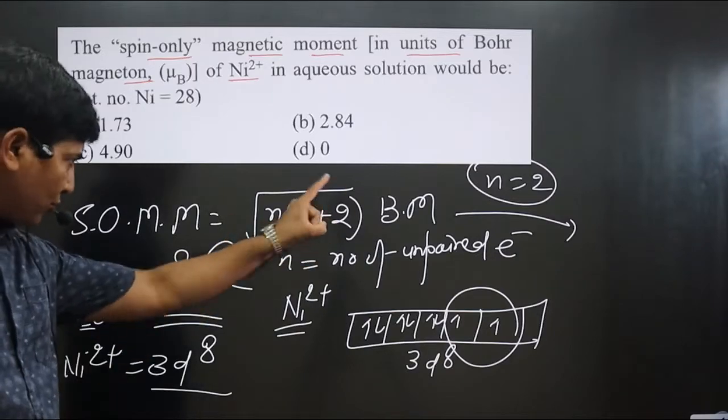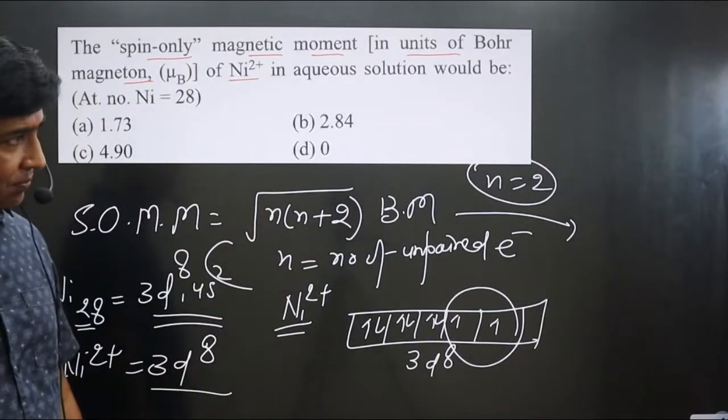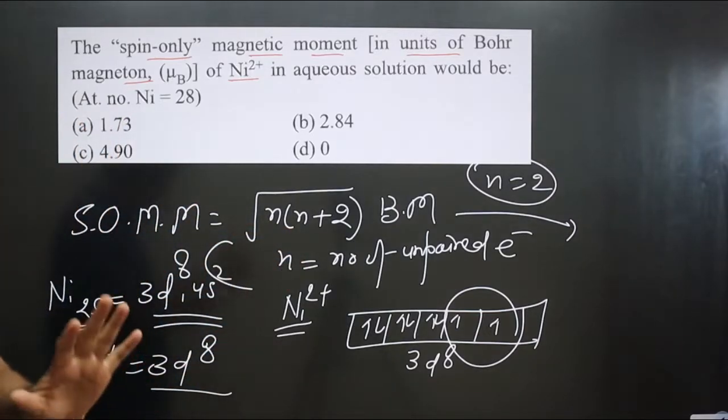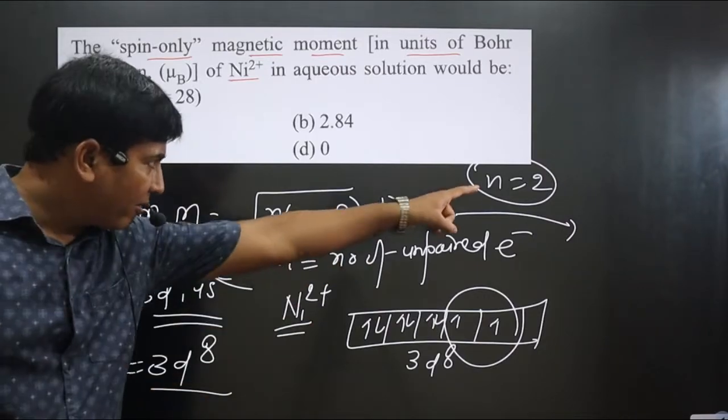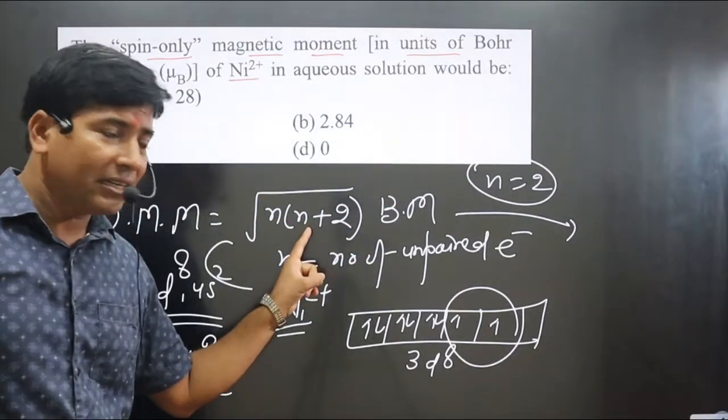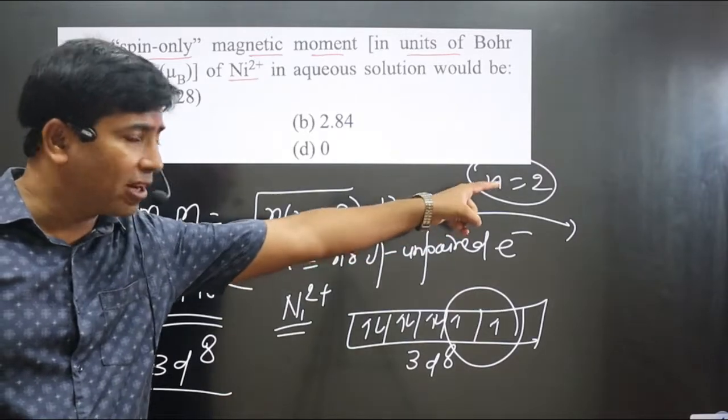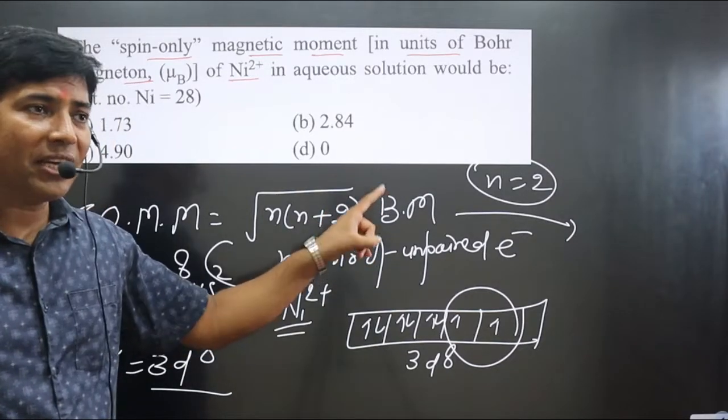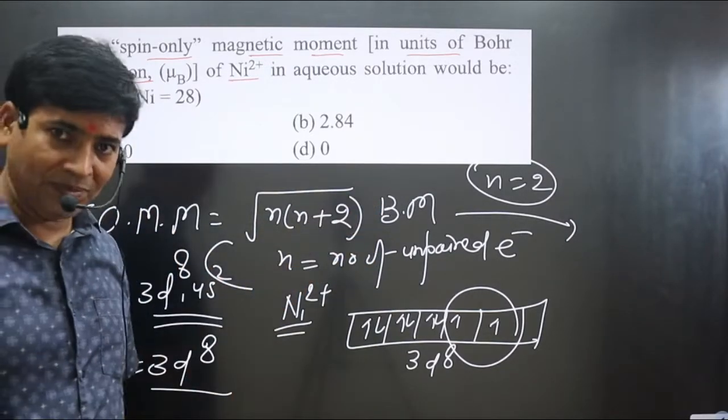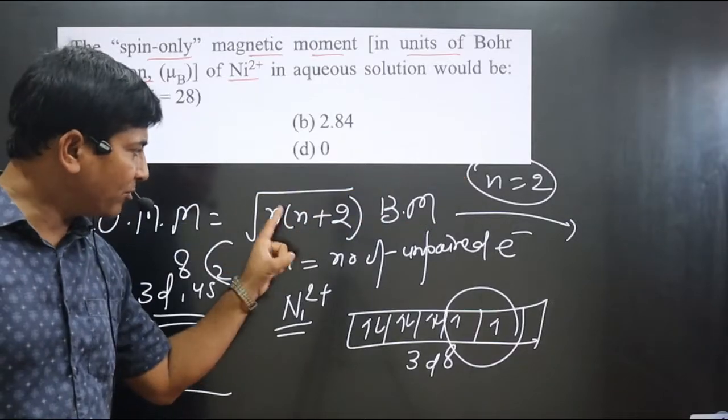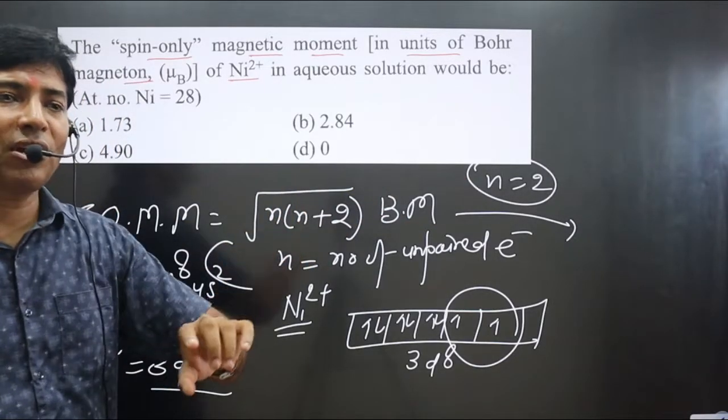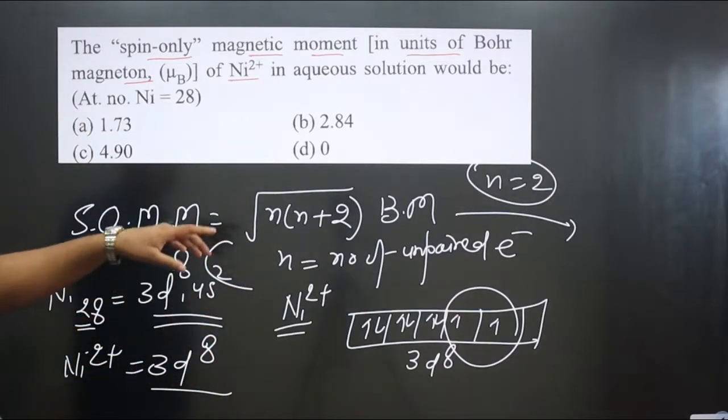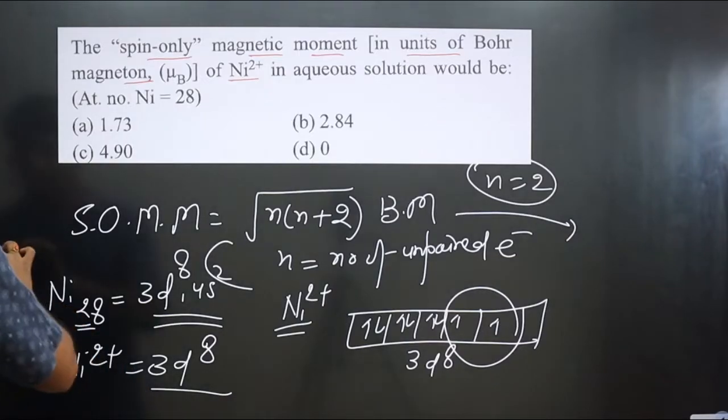If n value is 2, so if you simplify after plugging in n value, whatever the final value you are getting, it will be starting from 2 only. You should answer the question. If n value is 1 and you plug in here and simplify, the final value will be 1 point something. If n value is 2, then the final value will be starting from 2 only, 2 point something. So you don't need to simplify this one. You can see n value is starting from 2. You can see option B is correct.